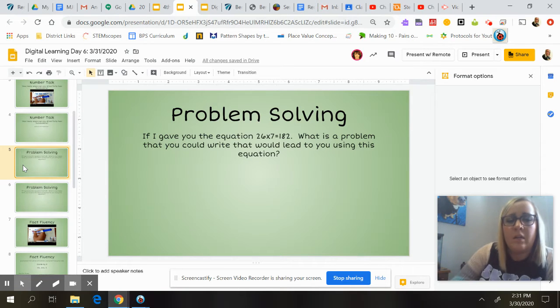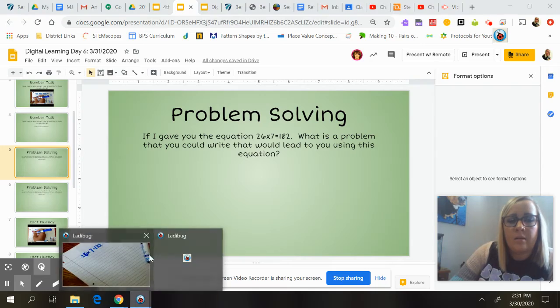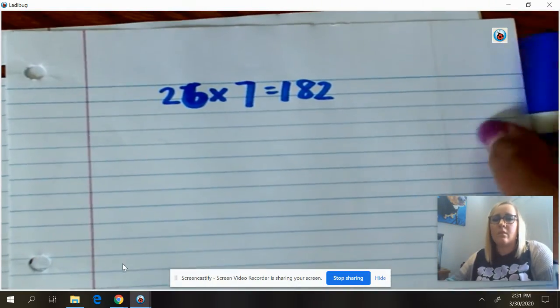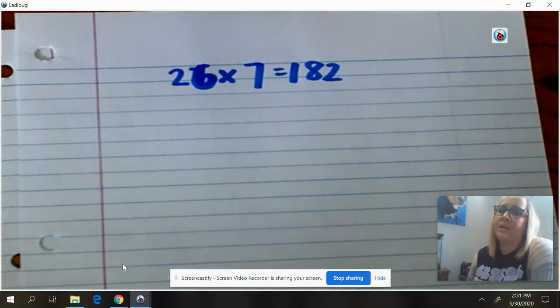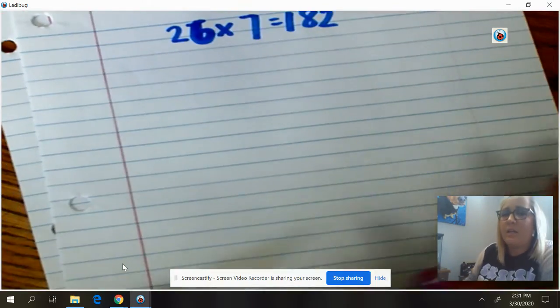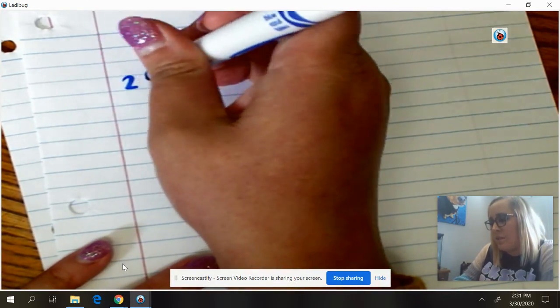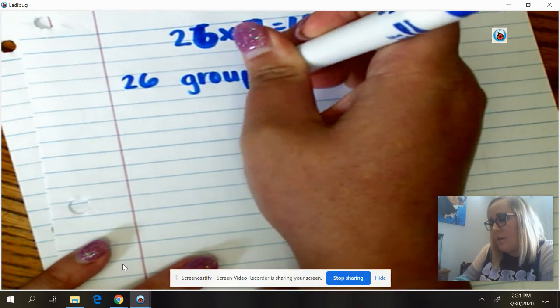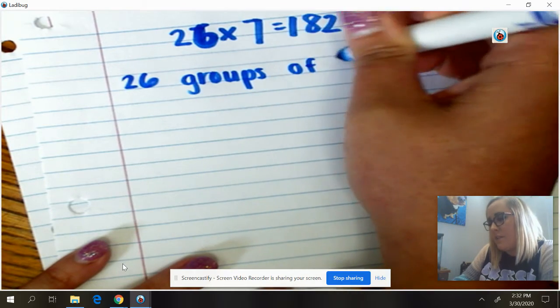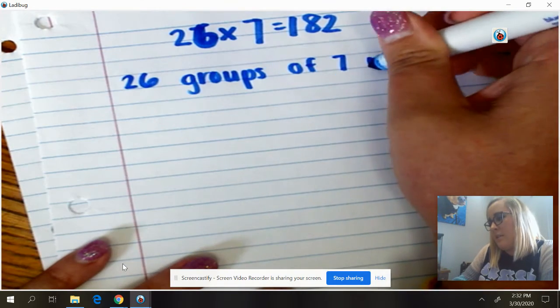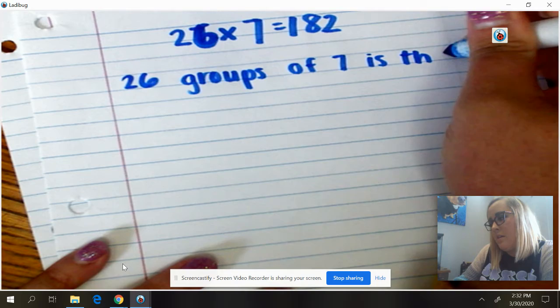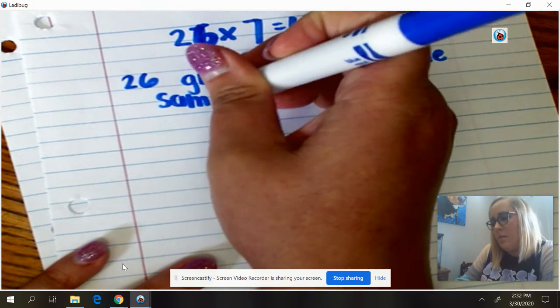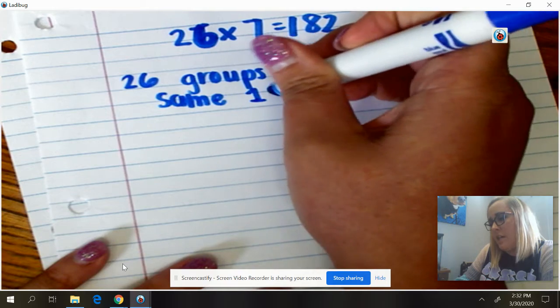Something like that. So I might just start by writing my problem down on my paper, and I'm going to think about this in words. So this would be 26 groups of 7 is the same as 182.